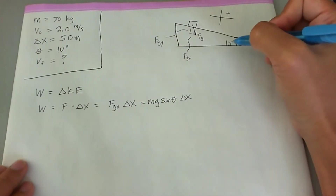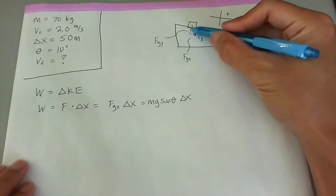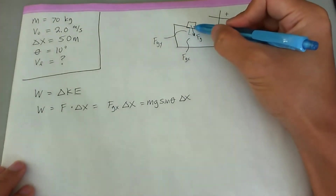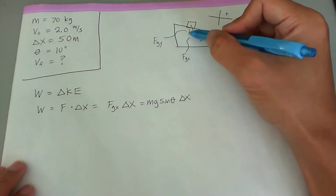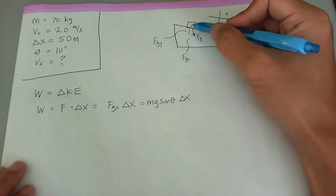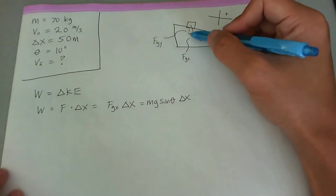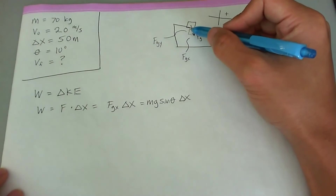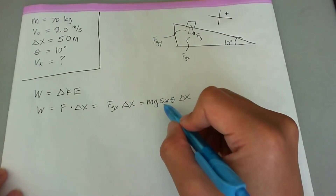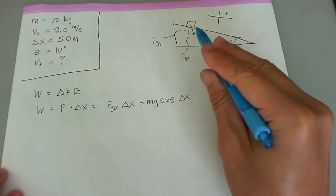Using a little bit of geometry, this theta here is going to equal this theta here — the given angle of 10 degrees appears in both places. We have a right triangle relating the components of the force of gravity to the actual downward force of gravity acting on the skier. Via SOHCAHTOA, since we're furthest from the given theta, we use the sine function: fg in x equals fg times sine of theta.